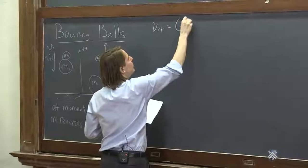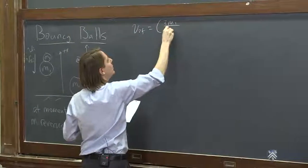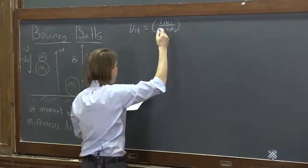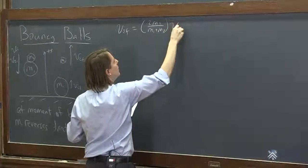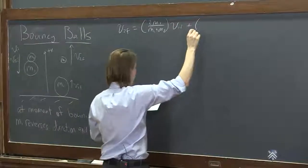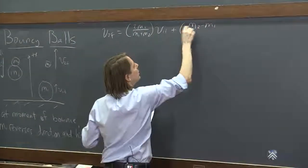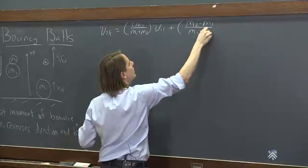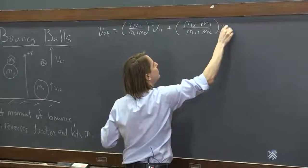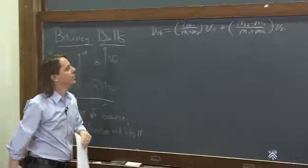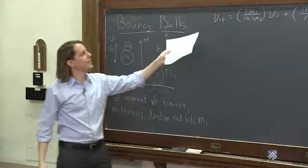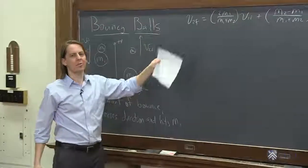So that was 2M1 over M1 plus M2 V1i plus M2 minus M1 over M1 plus M2 V2i. So really the question is, how do you make that as big as possible?